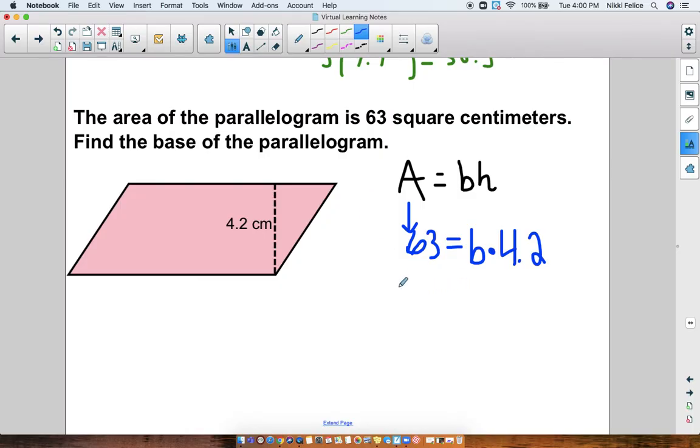But either way, we're going to be doing the same thing. In order to solve this, we need to use inverse operations. So if 63 equals 4.2 times B, we're going to divide 63 divided by 4.2 to figure out what our base is. So when we do 63 divided by 4.2, you should get the answer 15. So the base is 15 centimeters long.